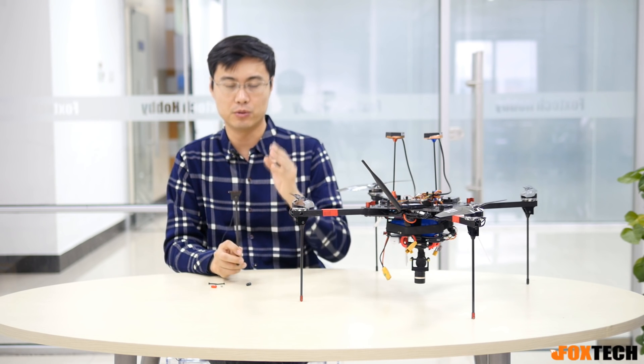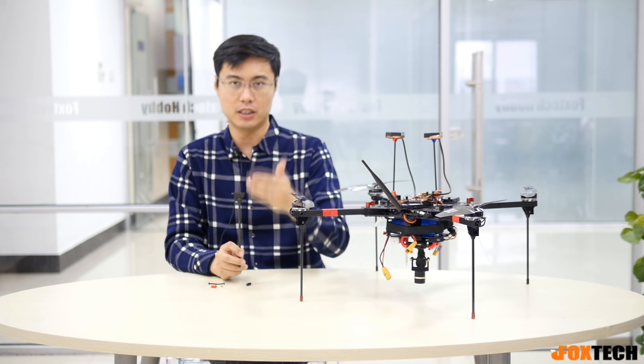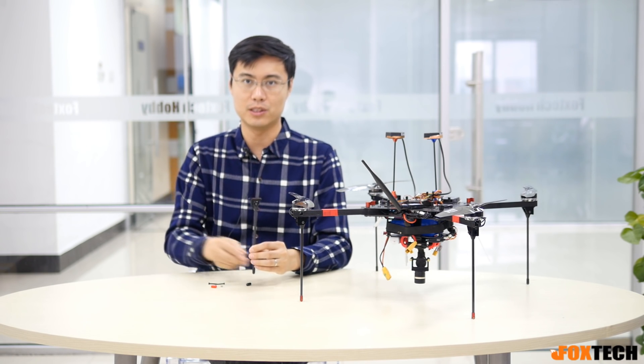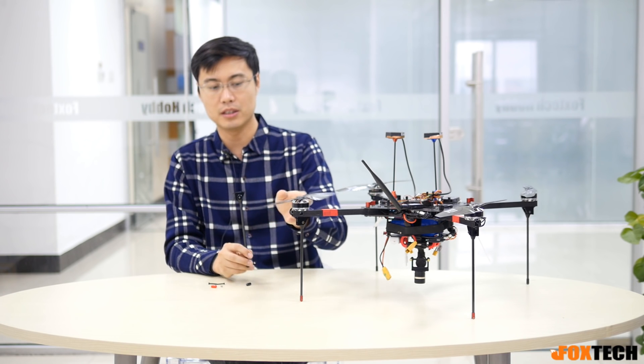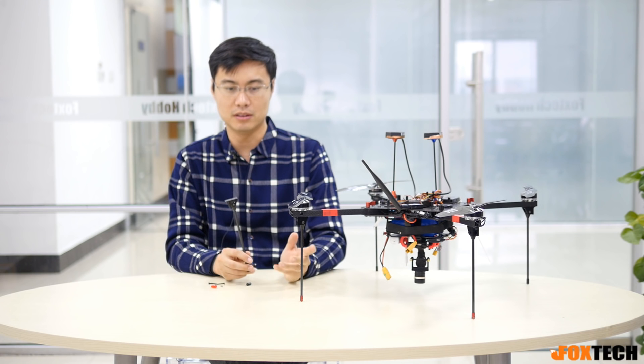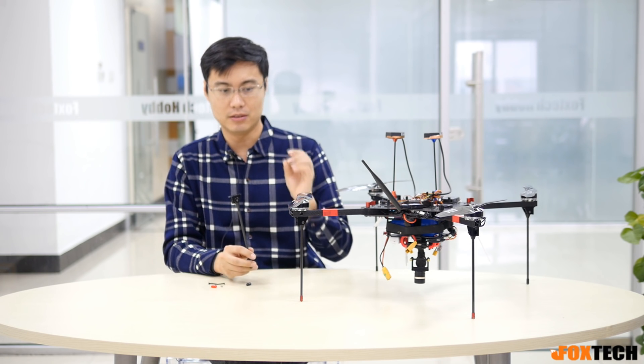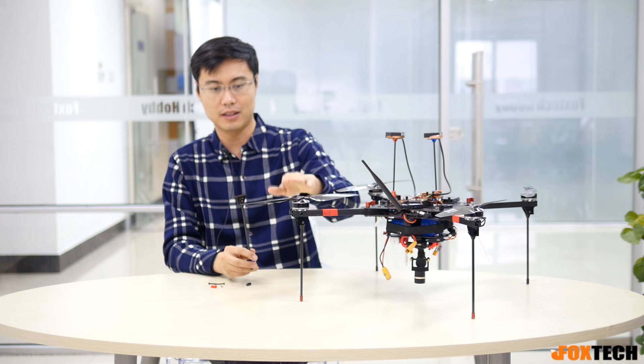So by using the different motors on the Hover One, you may have to drill one hole on the tube for the early version, but for the later version we already have the three mounting holes right here. So you can put different motors, for example, the 3508 or the 4008 motor like this.